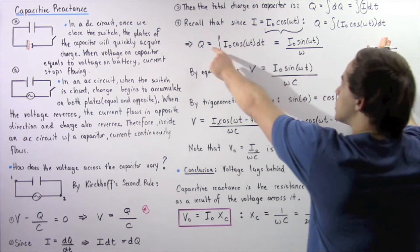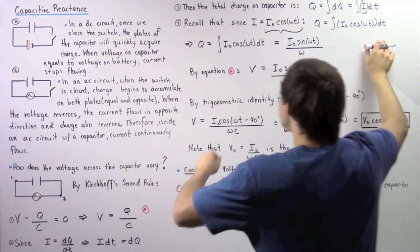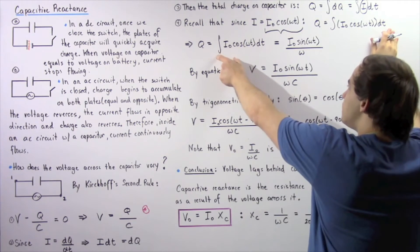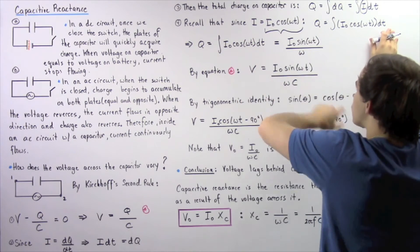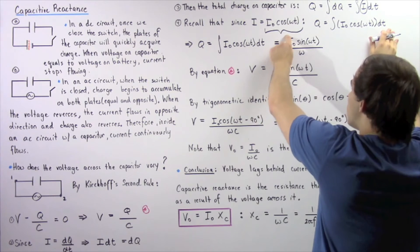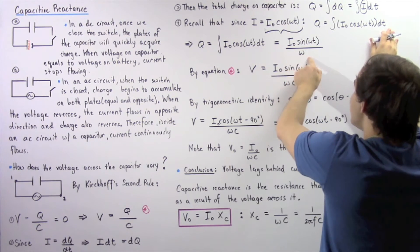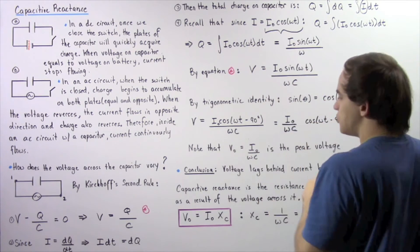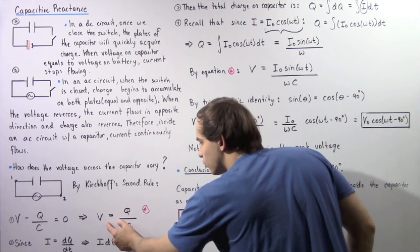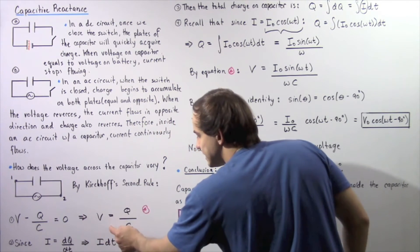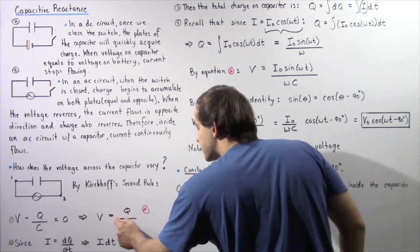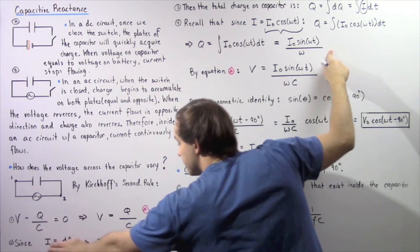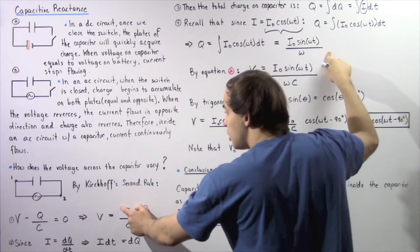We can substitute this expression for current, giving us Q equal to the integral of I₀·cos(ωt)·dt. Solving the integral and applying the chain rule, we get Q = I₀·sin(ωt) divided by ω, where omega comes from the chain rule. Our goal was to represent the charge Q in terms of time, which we have now accomplished.